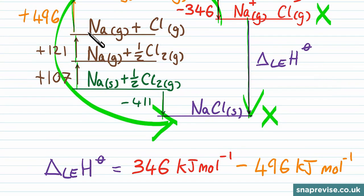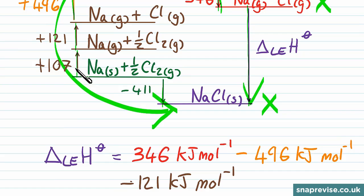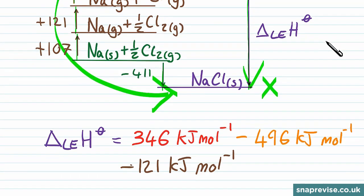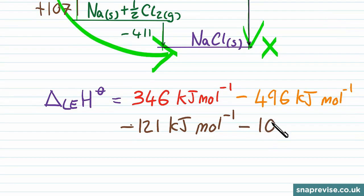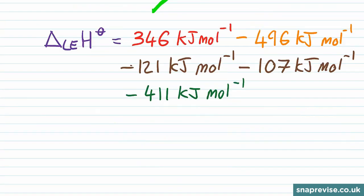Now if we go from here down to here, going against the arrow for the atomization of chlorine, again we're dropping in energy of 121 kJ per mole, so that's minus 121 kJ per mole. And then again we're dropping in energy to go down against the atomization of the sodium, so we take away another 107 kJ per mole in the energy level. Finally, we're going with this last arrow, which is once again down in energy, so we have minus 411 kJ per mole. And then if we put all of this into our calculator, this would give us a final answer for the lattice energy of sodium chloride of minus 789 kJ per mole.